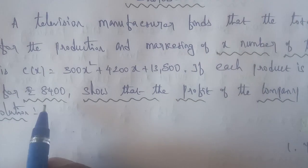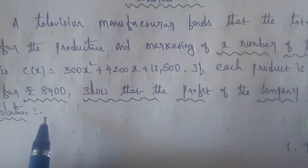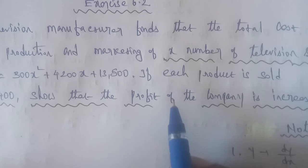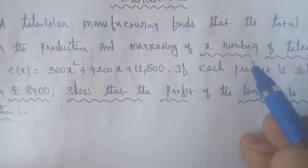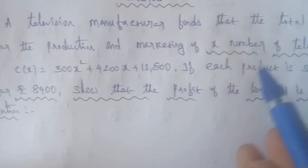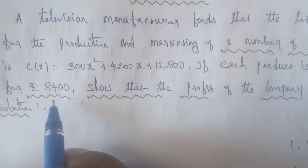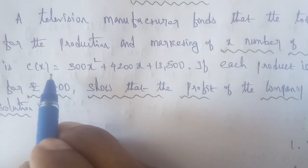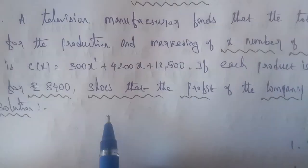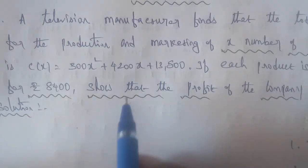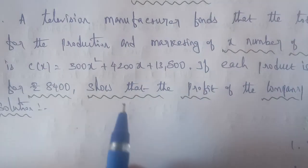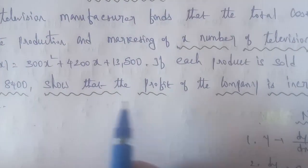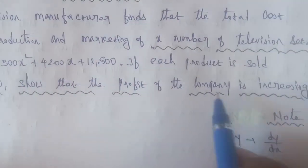The television rate is 8400 and the number of televisions is X. So the number of televisions is equal to the variable X. The given cost function is provided and we need to show that the profit of the company is increasing.